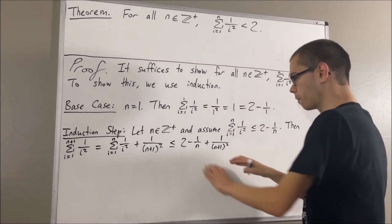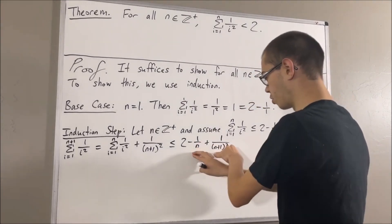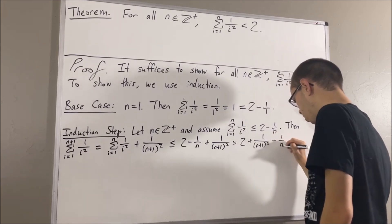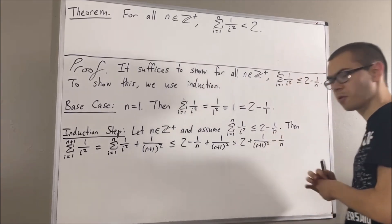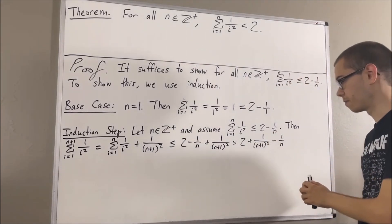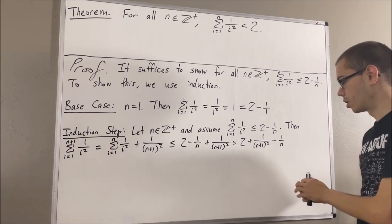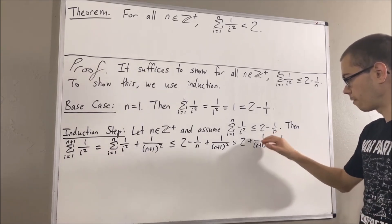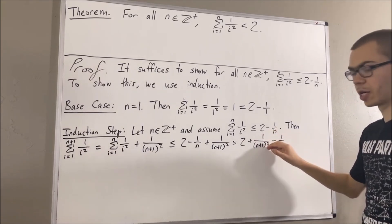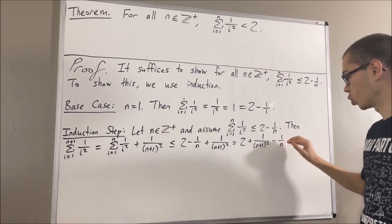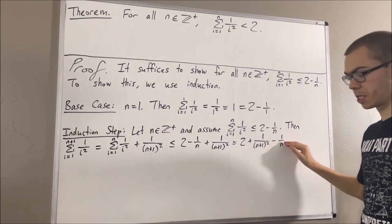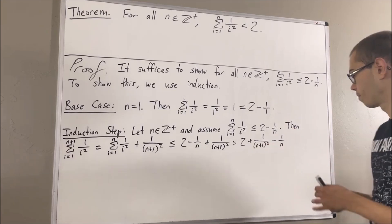I'm just going to flip these two terms around, and now we're going to combine them into a single fraction. To do that, I'm going to multiply both the numerator and denominator of the first fraction by n, and multiply both the numerator and denominator of the second fraction by (n+1) squared.